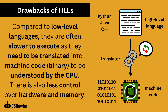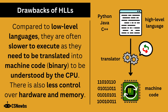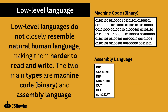There's also less control over hardware and memory. Low-level languages do not resemble natural human language, making them harder to read and write. The two main types are machine code, which is binary, and assembly language, which is not on the OCR GCSE specification.